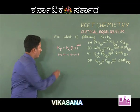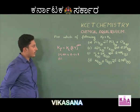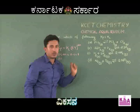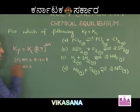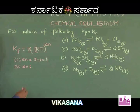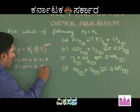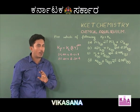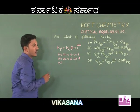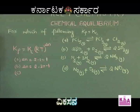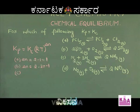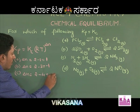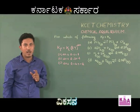For option B, the moles of gaseous products is 2, and the moles of gaseous reactants is 2 + 1 = 3. Hence, ΔN = 2 − 3 = −1. So for this reaction also, ΔN is not equal to 0. For option C, 2 moles of ammonia is formed from 1 mole of nitrogen and 3 moles of hydrogen. Hence, ΔN = 2 − 4 = −2. Option C is also not the right answer.